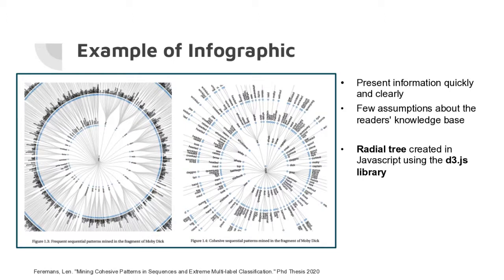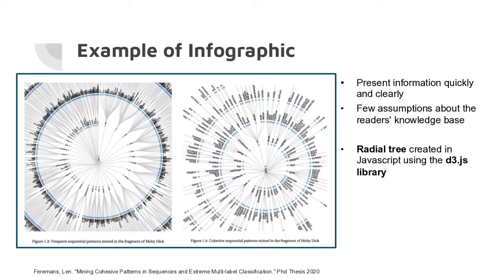An example of an infographic: this is a visualization from my PhD thesis. On the left you see a complex graph — combinations of single words and all different pairs of words, which results in a lot of combinations. On the right it's less cluttered. I included this in my introduction to convey the idea that you have fewer combinations using my methods, assuming less background knowledge from the reader, just focusing on presenting a key idea.